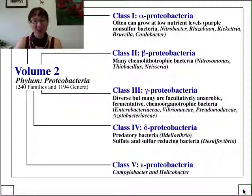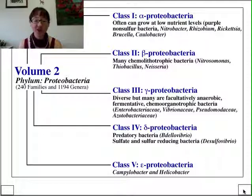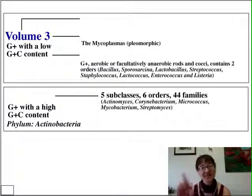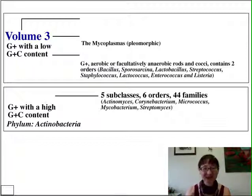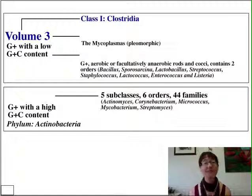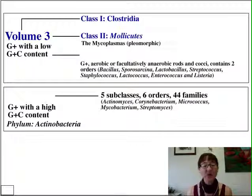Leaving the Proteobacteria behind, let's look at volumes 3, 4, and 5 — which are very recently published, especially volumes 4 and 5, so recently that I've had to make changes to your notes. Volume 3 is devoted to the gram-positives with low GC content — less than 50 mole percent GC. This encompasses the Clostridia, the endospore-forming group; we talked about Clostridium botulinum and its anaerobic nature.